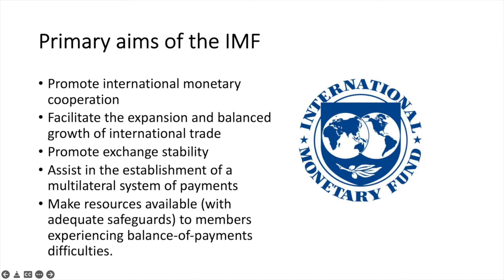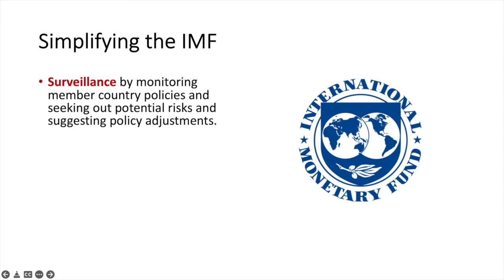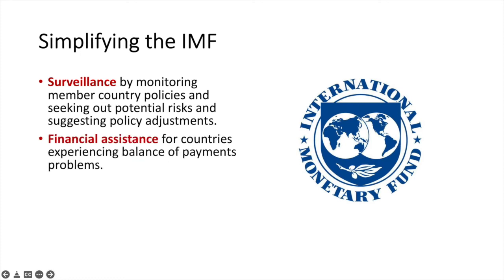We'll simplify what the IMF does by focusing on three different areas. The three key focus areas of the IMF include: first, surveillance — by monitoring member country policies, seeking out potential risks and suggesting policy adjustments; and second, offering financial assistance to countries experiencing balance of payments problems.